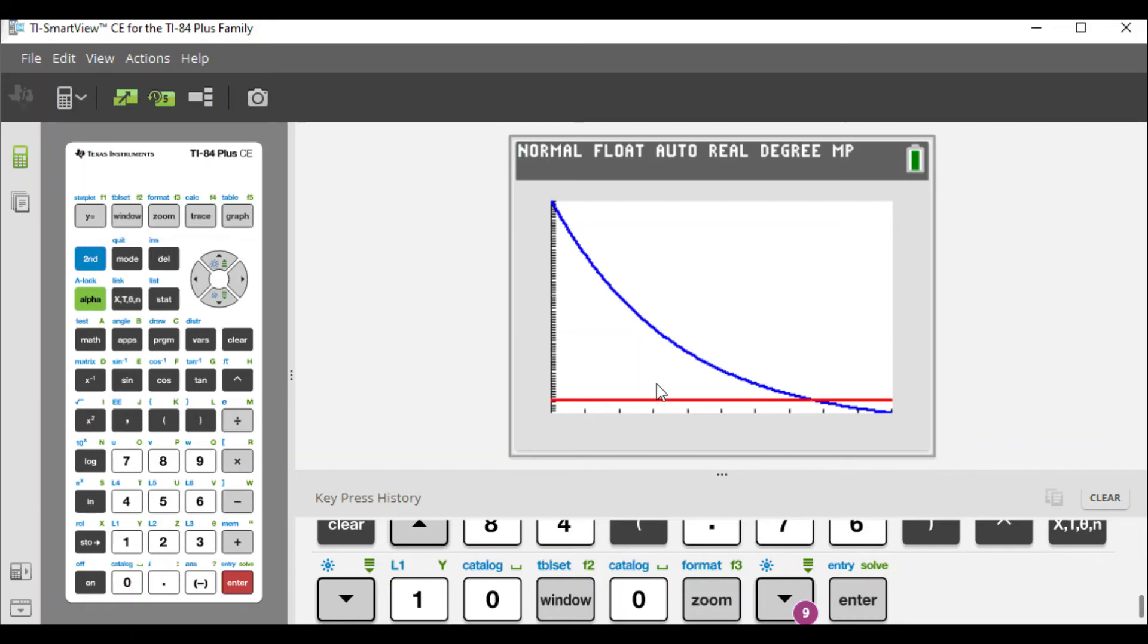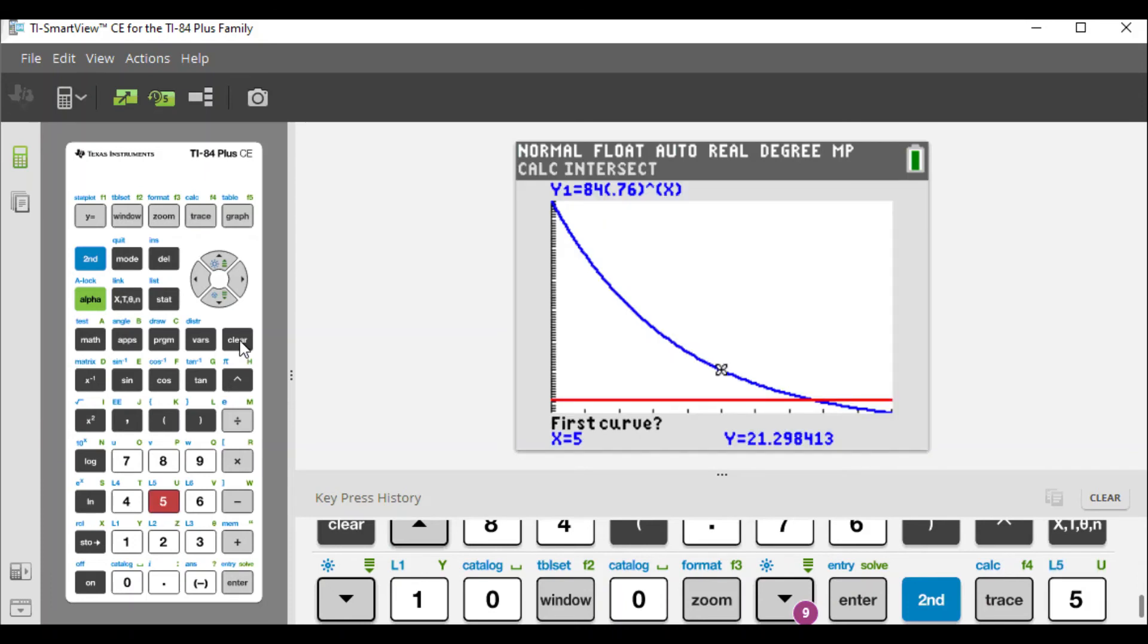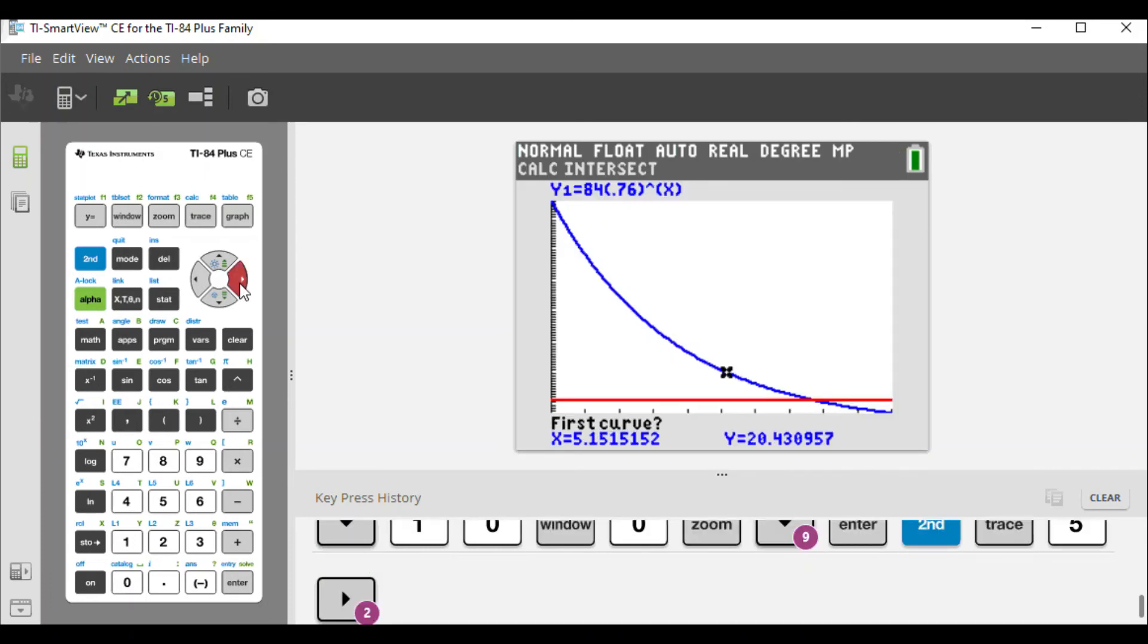However, it looks like 7 and almost like 7.7 here. But how do we find this? We will use the calc part here, second trace, and we're going to use the intersect function. Intersect means please identify where the two graphs intersect. We'll move the cursor closer to the point of intersection. It definitely looks like it's seven something, so it's pretty close here.